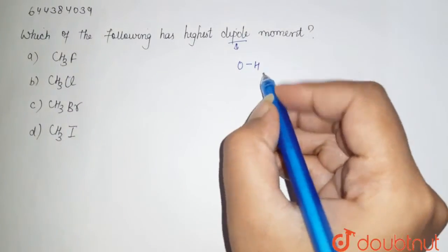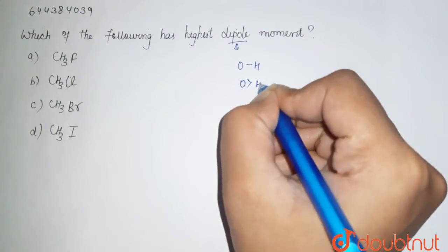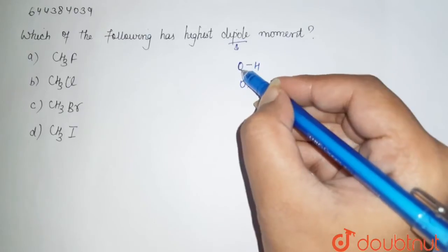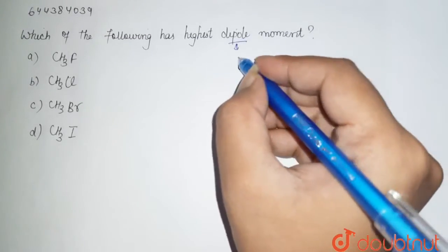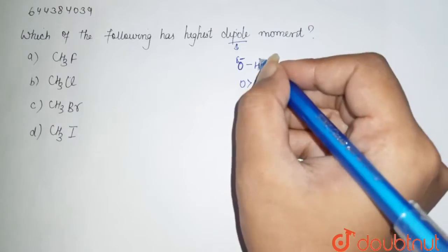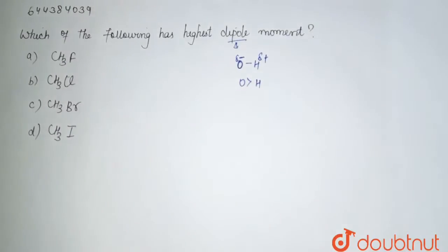Here we have oxygen and hydrogen. Oxygen is more electronegative than hydrogen. Oxygen withdraws the electron density of hydrogen and creates partial negative charge over here and positive charge here.